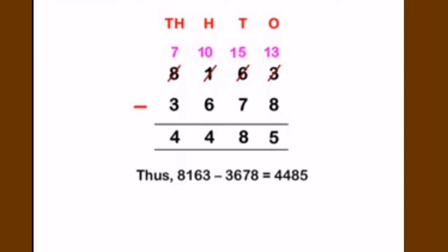13 minus 8 is 5. Next, the tens place now has 5, but 5 minus 7 requires borrowing from the hundreds place. We borrow 1 from hundreds, making tens 15; 15 minus 7 is 8. The hundreds place becomes 0; since 0 minus 6 is not possible, we borrow from thousands: 8 becomes 7 and 0 becomes 10; 10 minus 6 is 4.